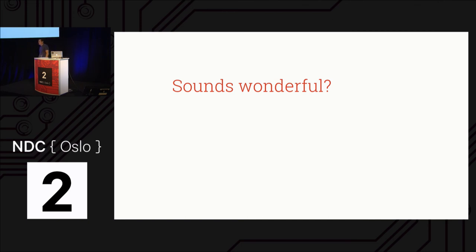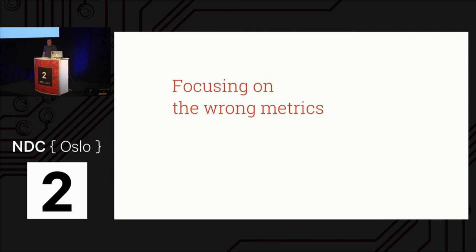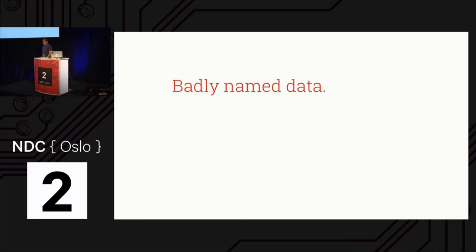All of this sounds wonderful, but it will go wrong. The biggest thing that will go wrong: no one uses the data to make decisions. We gather a lot of data, buy expensive software to track everything, but nobody uses it — maybe some guy comes once a quarter needing a report. It should be used by developers all the time. Focusing on the wrong metrics is also a danger, and badly named data is something I've encountered a lot — it says something but means something else, so you make decisions on the wrong type of data. Name your data correctly.